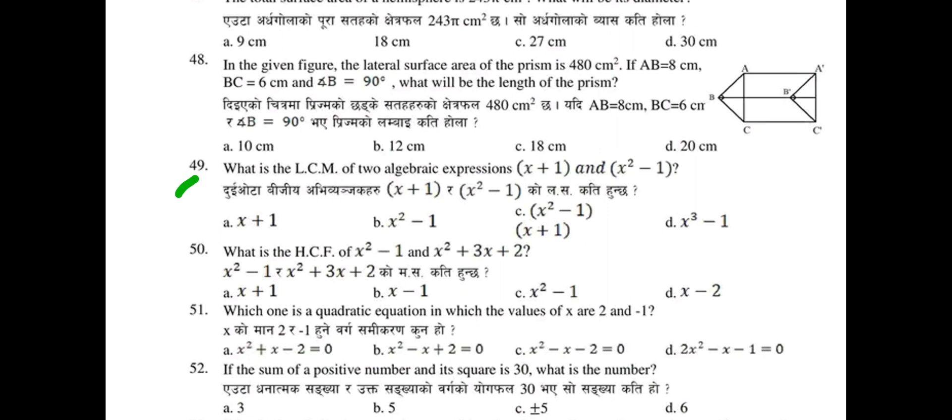Question 49: What is the LCM of two algebraic expressions (x + 1) and (x² − 1)? Question 50: What is the HCF (Highest Common Factor) of (x² − 100) and (x² + 3x + 2)? Select the correct option.